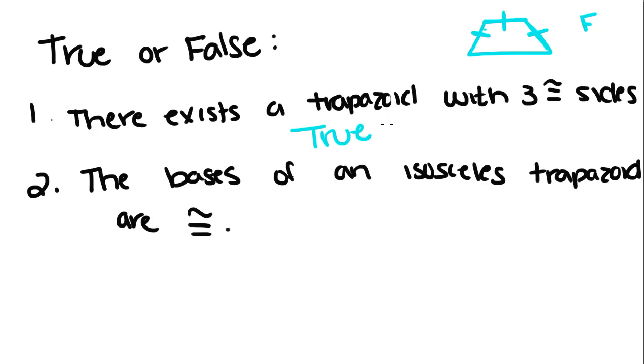The bases of an isosceles trapezoid are congruent. Well, we just answered that. It's the legs that are congruent. So that is false.